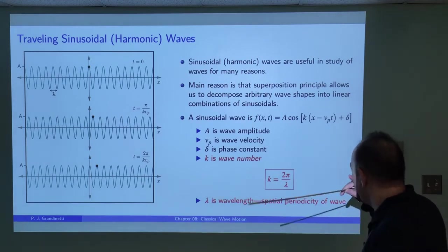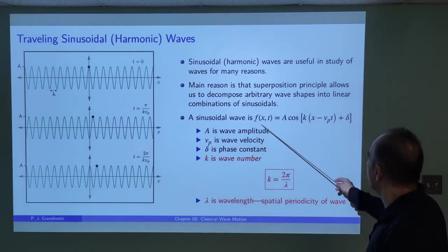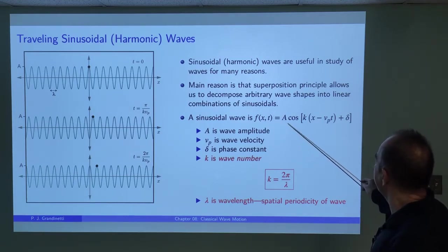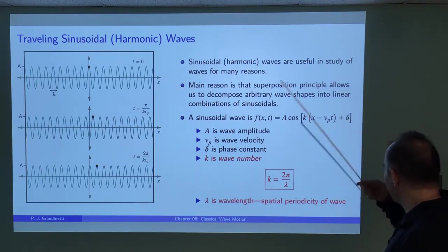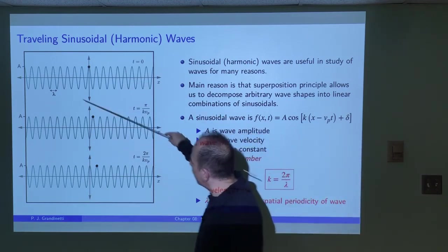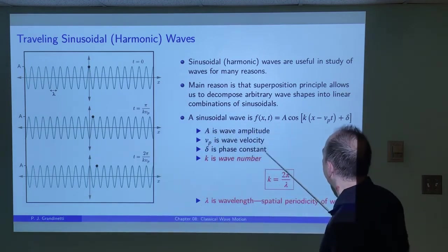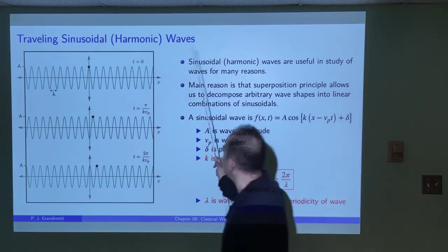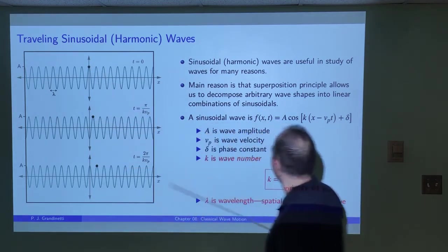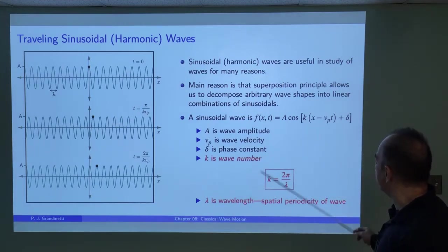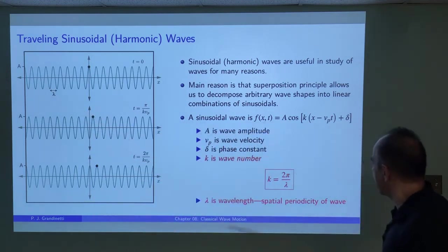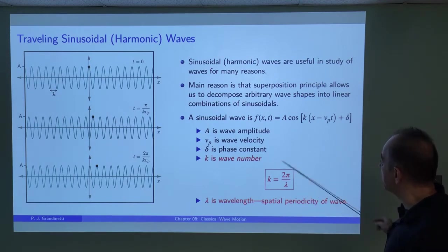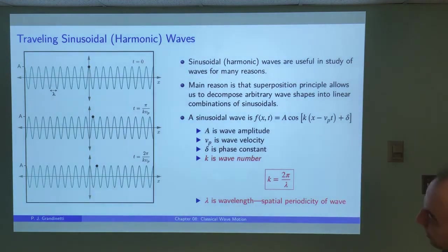If we look at a sinusoidal wave, we can write it as: f = A·cos(kx − vp·t + δ), where A is the amplitude, vp is the wave velocity, δ is the initial phase constant, and k is the wave number, equal to 2π over λ. Here λ is the distance between two adjacent crests or troughs — the spatial periodicity of the wave. So a sinusoid can be described by a wave number given by the spacing between adjacent crests or troughs.